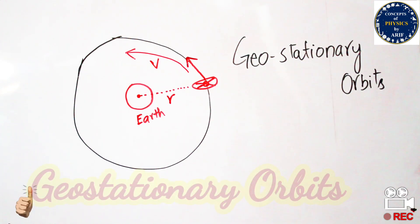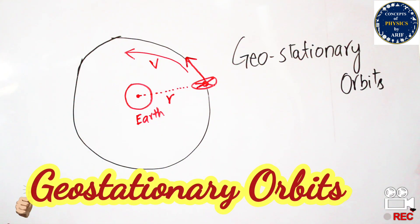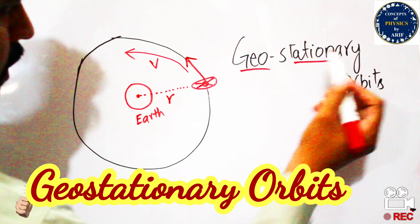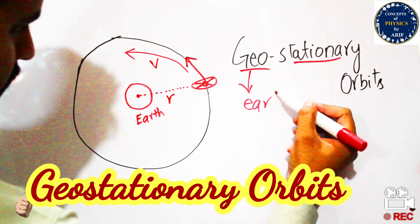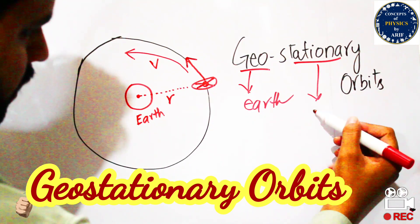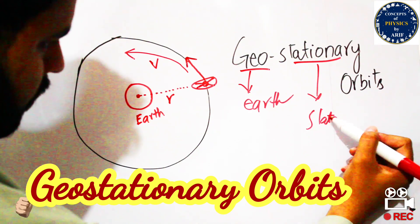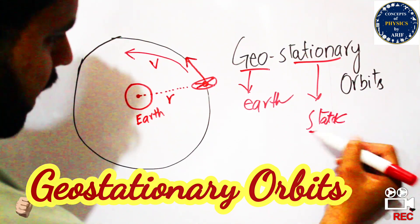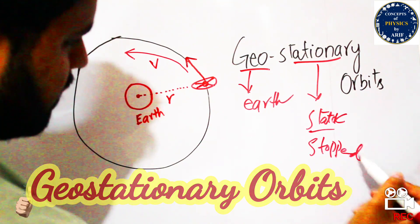Hi guys, welcome to my YouTube channel. In this video we will briefly discuss about geostationary orbits. First of all we need to understand what is geostationary: 'geo' means Earth and 'stationary' means static or stopped.